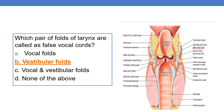Vestibular folds are called as false vocal cords, and vocal folds are called as true vocal cords. So the answer to which pair of folds of the larynx are called as false vocal cords is vestibular folds.